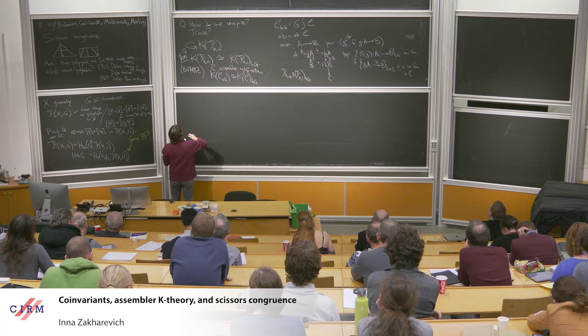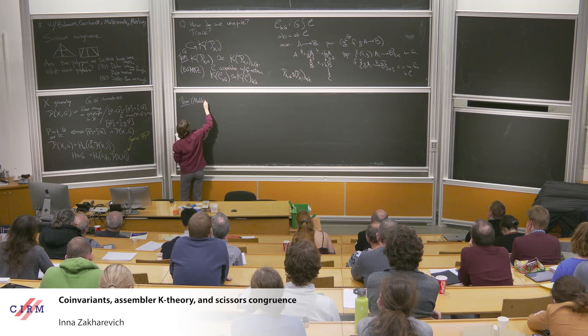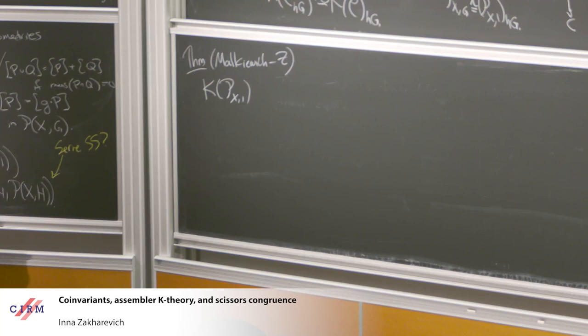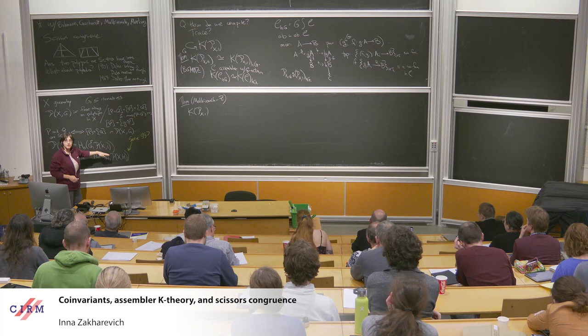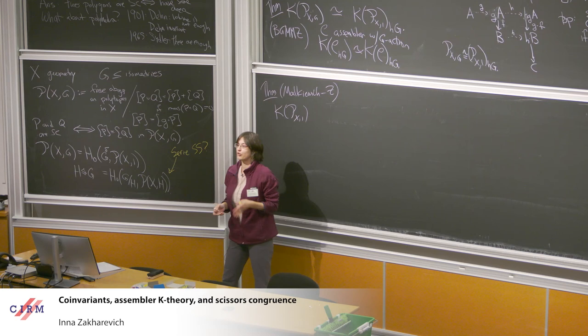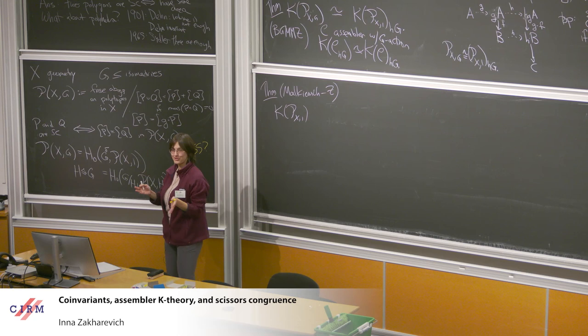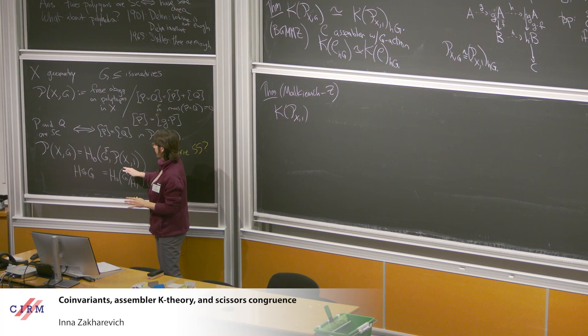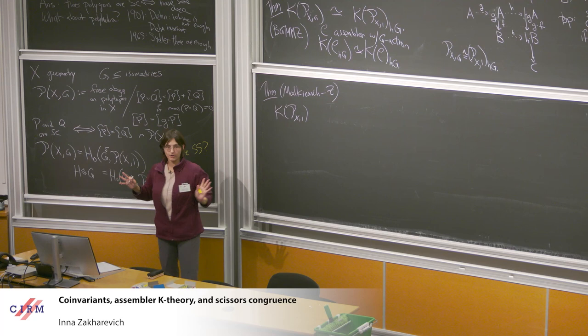How do we understand P(X,1)? The group P(X,1) — the scissors congruence group with trivial G — is called the Steinberg module of your ambient space. It's a free abelian group; it's very large, but it is free abelian. At least it's vaguely reassuring that we can give a nice description of it.